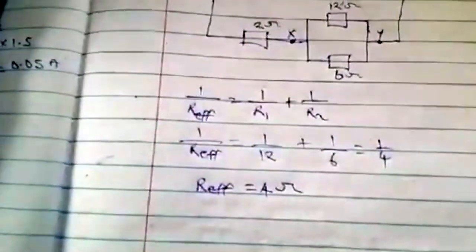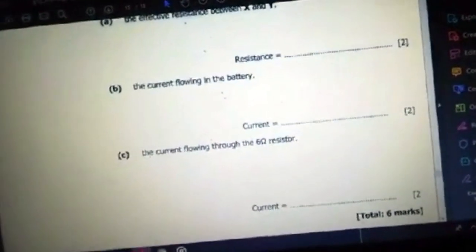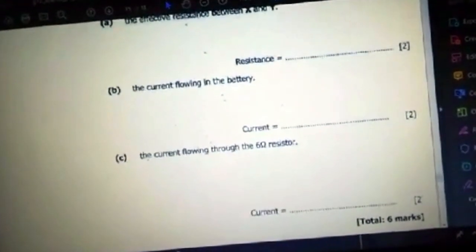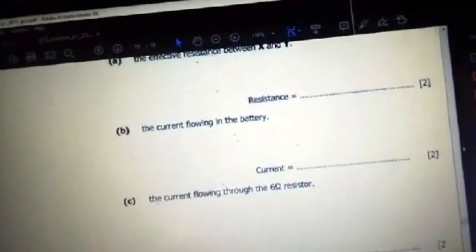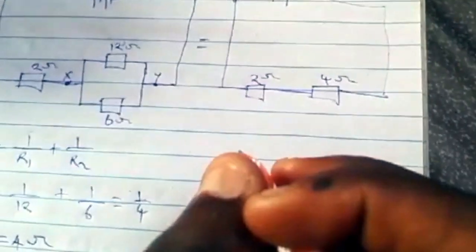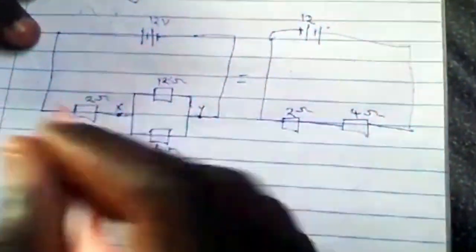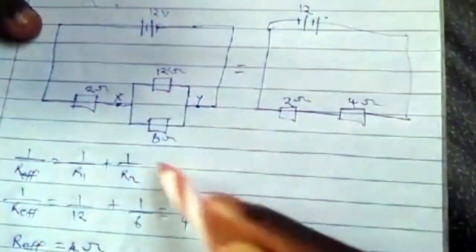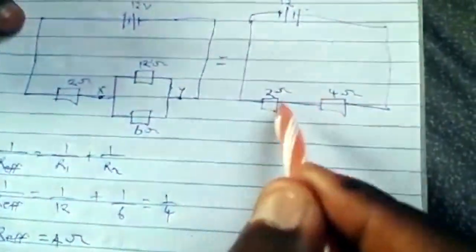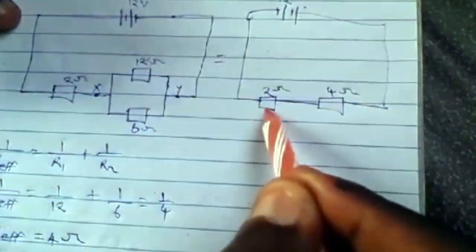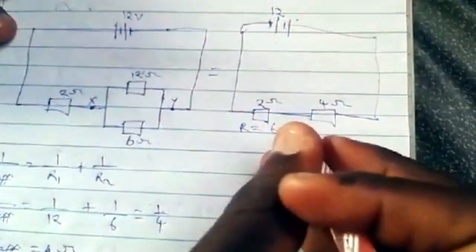Calculate the current flowing in the battery, the overall current. This circuit is equivalent to this one if we find the effective resistance. Now they are in series, so we add them to find the total resistance, which equals 6 ohms. What is the current? This is 12 volts. Current equals V over R, which is 12 over 6, which equals 2 amps.